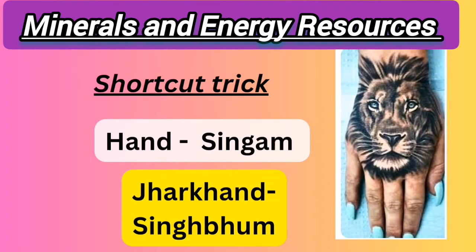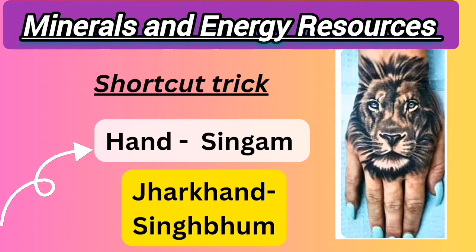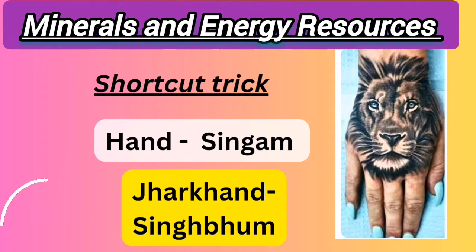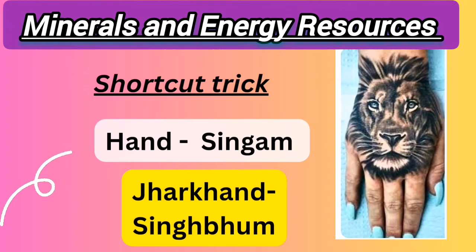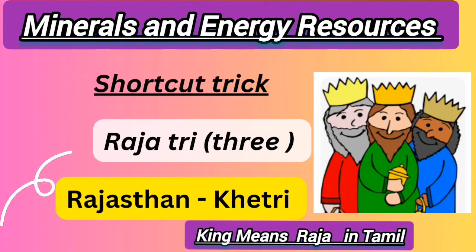The next trick is 'hand singam' — this is a shortcut for a copper ore producing state. 'Hand' refers to Jharkhand, and 'singam' means lion in Tamil, which represents Singhbhum. Look at this image: a lion tattoo on a hand. So Jharkhand is the state and Singhbhum is the mining area.